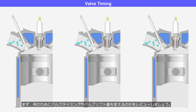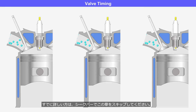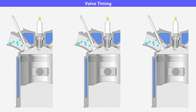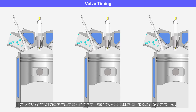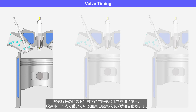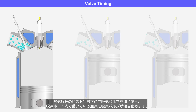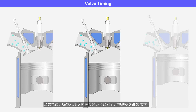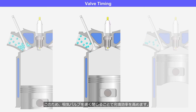First, let's review why valve timing and valve lift are controlled. The Variable Valvetrain System is a device that alters two elements: valve timing and valve lift. Air has weight and is subject to inertia. Still air cannot start moving suddenly, and moving air cannot stop abruptly. When the intake valve closes at the piston's lowermost position of the intake stroke, it traps the moving air within the intake port. To prevent this, the intake valve is retardedly closed to enhance the efficiency of the suction.